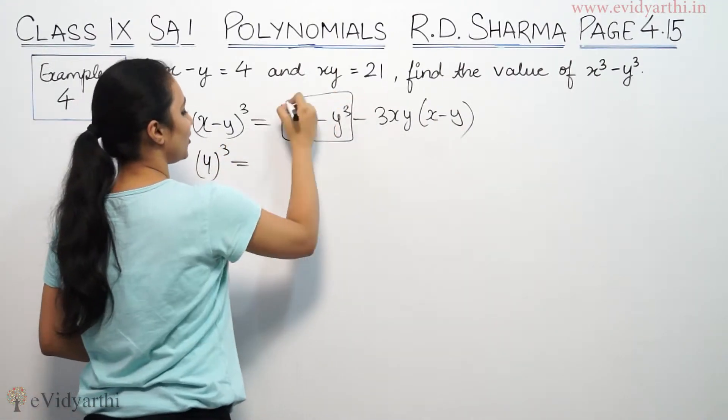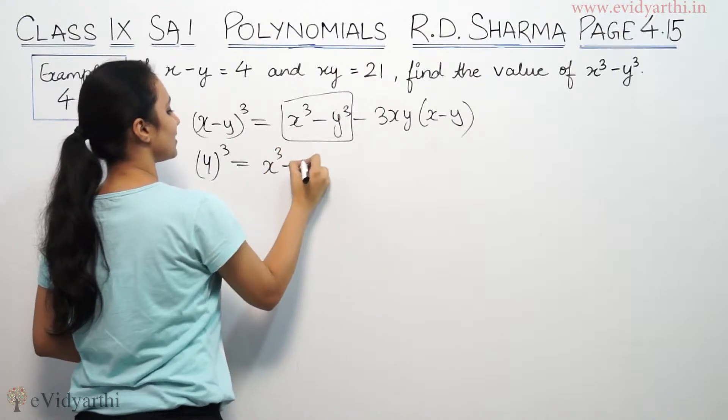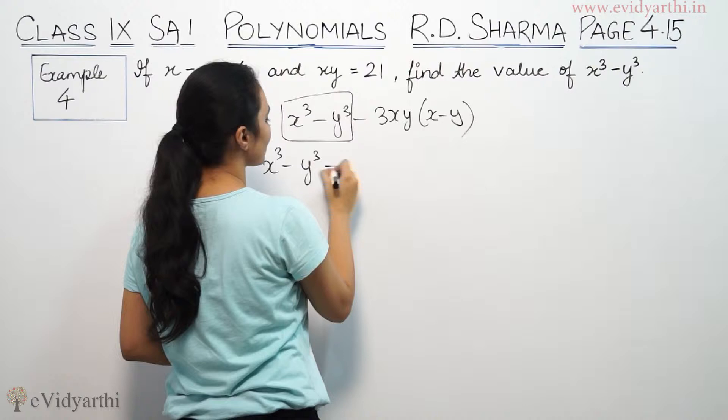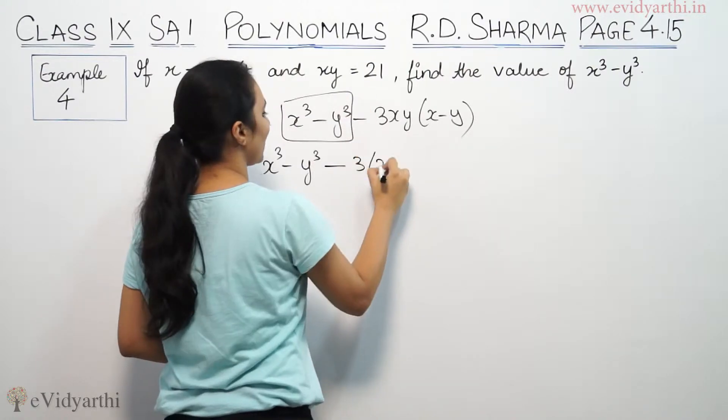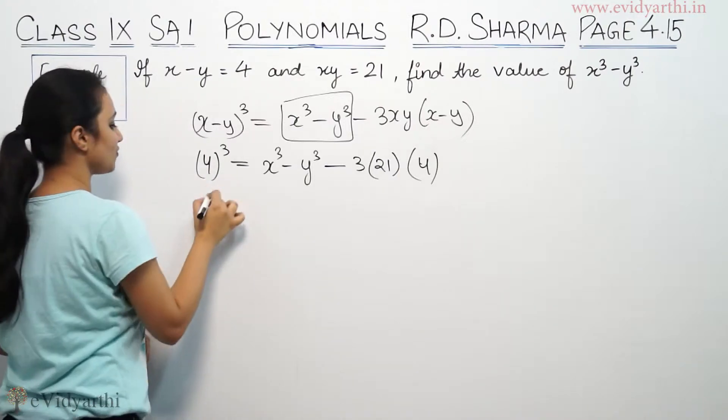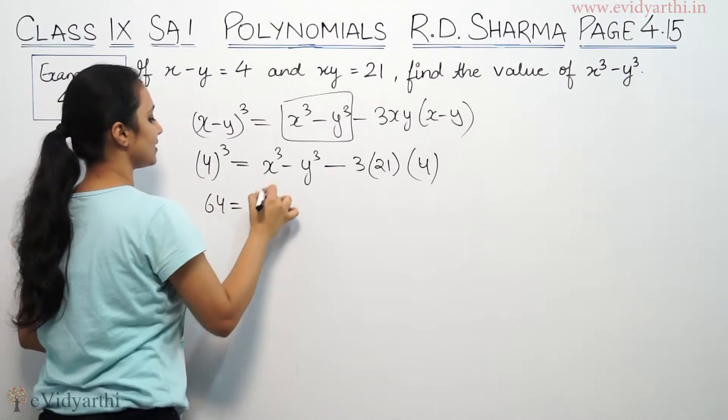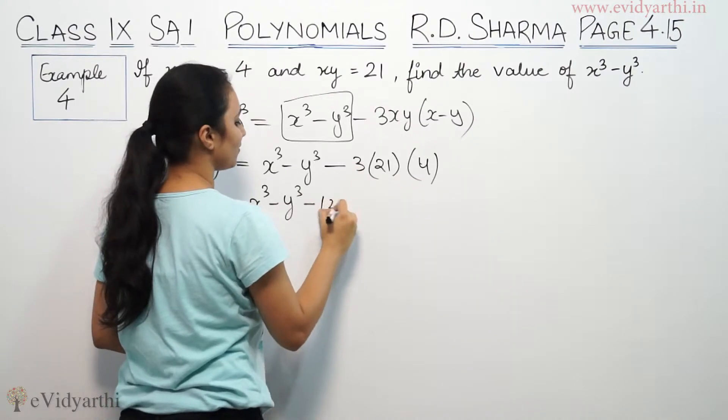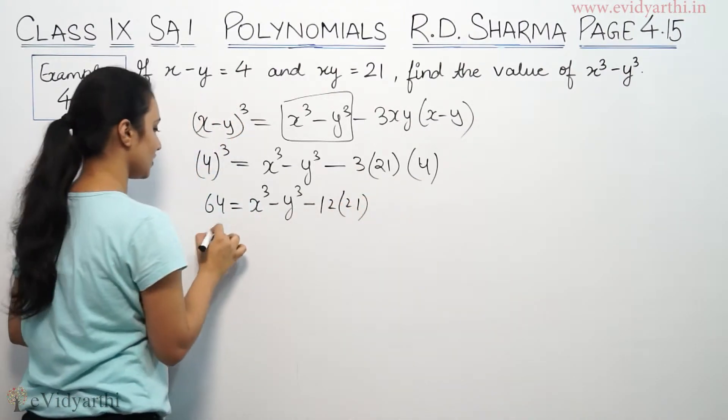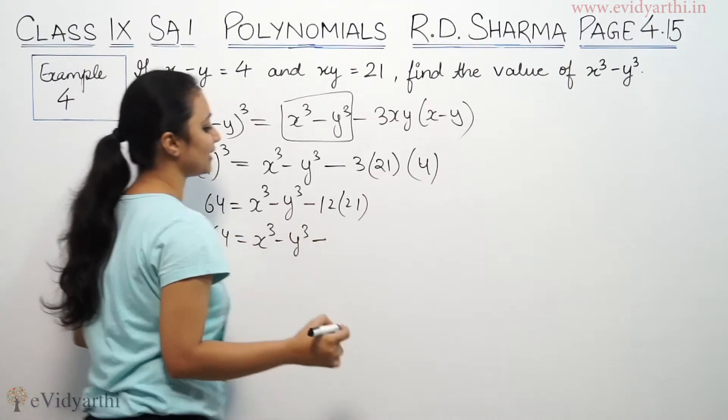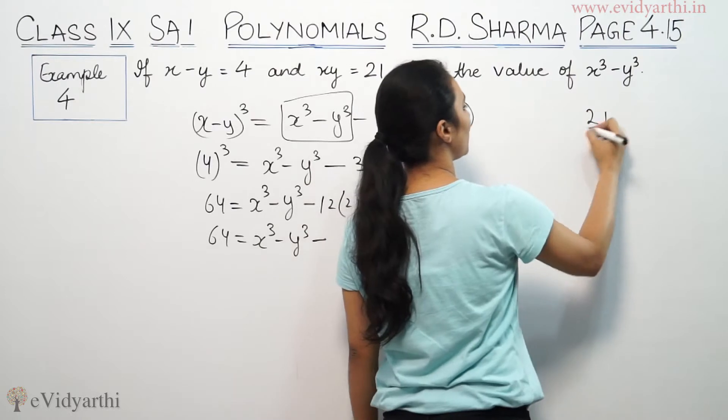x cube minus y cube minus 3 times xy, so that's 3 times 21 times x minus y, which is 4.